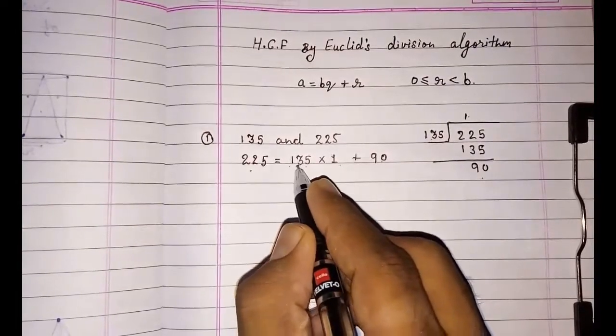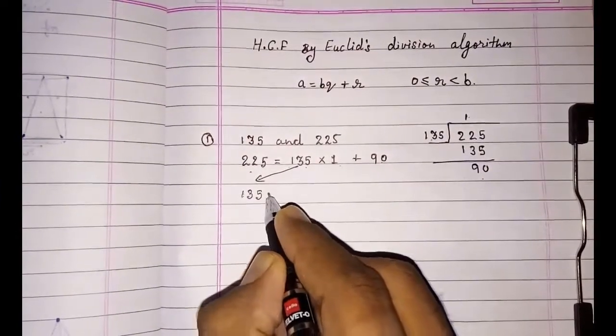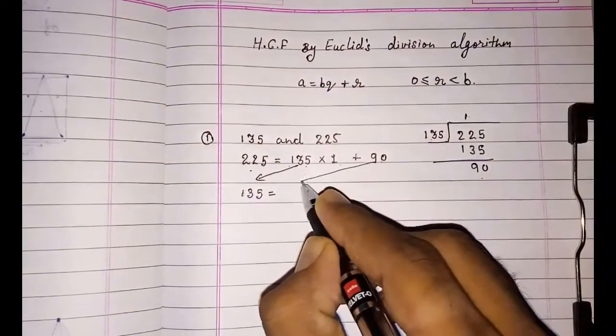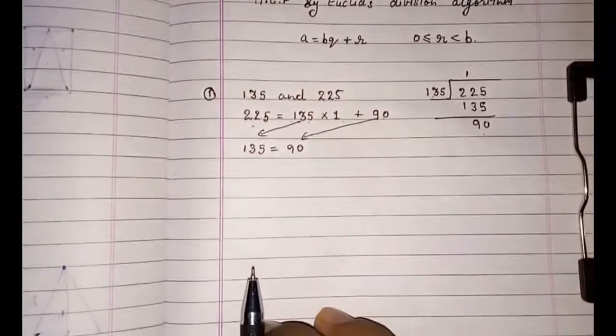Now in the next step, we have to convert this: 135 becomes our a and this 90 will become our b. Now again we have to divide it.